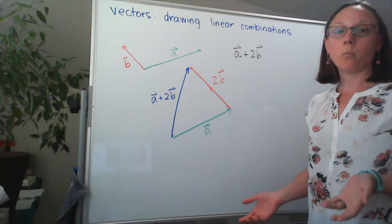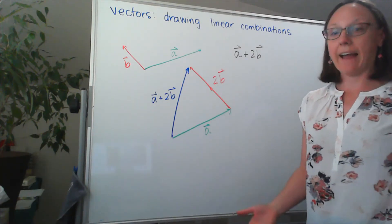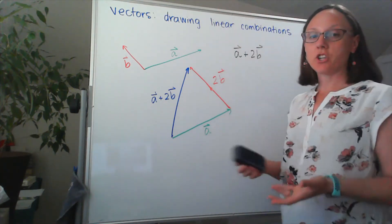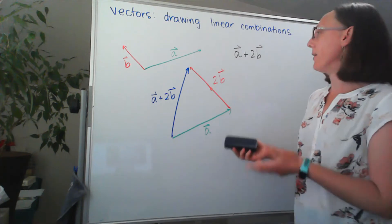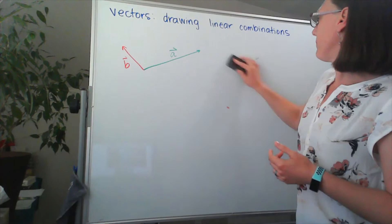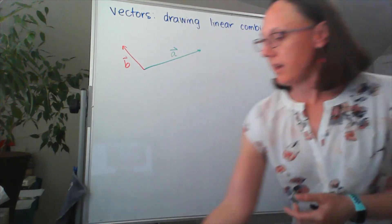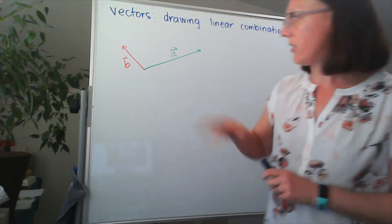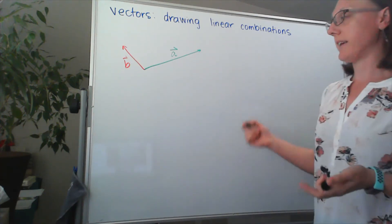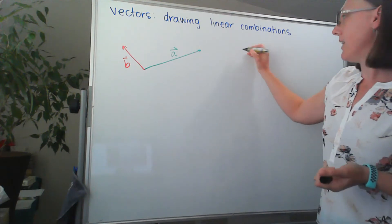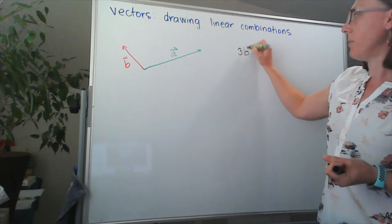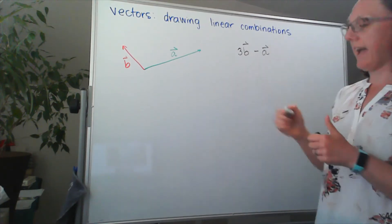But what if we needed to subtract the vectors instead of adding them? Well, there are two ways that we can look at this. So let's get a new linear combination. And let's say that I've got the vector B and A. And what I would like to sketch is three B minus the vector A.